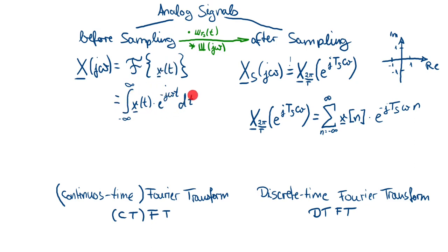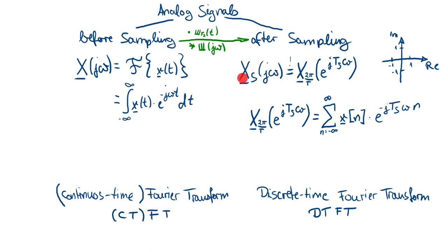This is the formal definition of the Fourier transform. Now we sample the signal. Sampling means multiplying it with the Dirac comb in the time domain, or convolving with its Fourier transform — in this case the Continuous-Time Fourier Transform of the Dirac comb, which itself is a Dirac comb in the frequency domain. After sampling we get the spectrum of the sampled signal, which contains all the repetitions and redundant information.